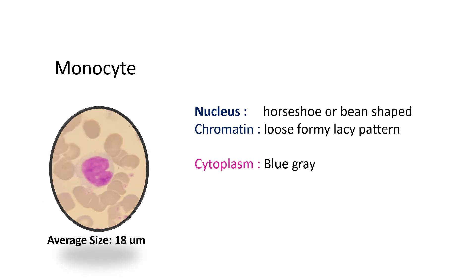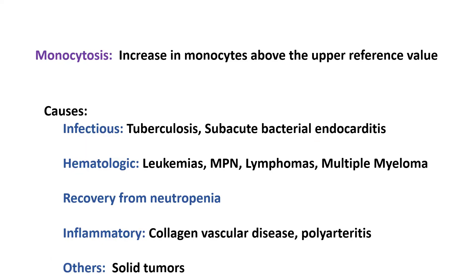The monocyte has a horseshoe- or bean-shaped nucleus with loose, lacy chromatin, and bluish-green cytoplasm. Its average size is 18 micrometers. Monocytosis is defined as more than 1000 cells per cubic millimeter. Causes include infectious causes like tuberculosis and subacute bacterial endocarditis, hematologic causes like leukemias, myeloproliferative neoplasms, lymphomas, and multiple myeloma, recovery from neutropenia, and inflammatory causes like collagen vascular disease, polyarthritis, and solid tumors.